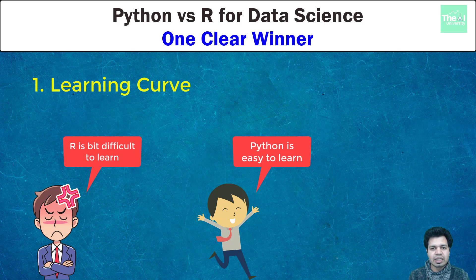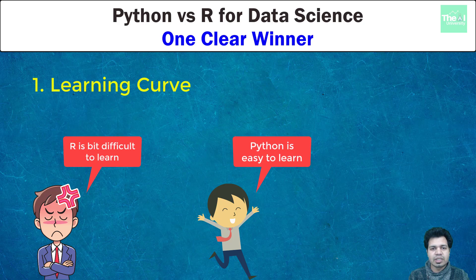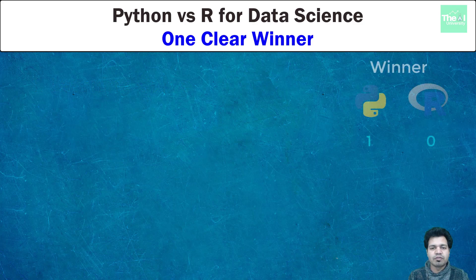Python on the other hand has a moderate learning curve and is very easy to understand. It has better stability, modularity, and code readability — Python can be read much like a verbal language. Python is a versatile language which can be used for production-grade web development as well. It also supports building IoT-based applications using Raspberry Pi, as well as machine and deep learning with the help of libraries like scikit-learn, Keras, TensorFlow, etc. So Python outperforms R here.